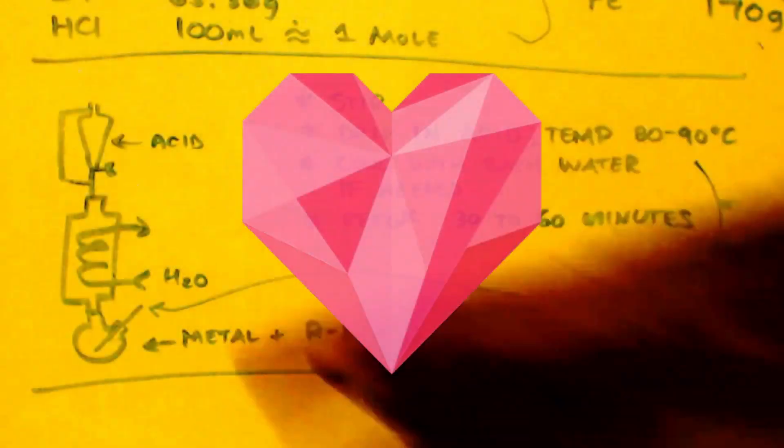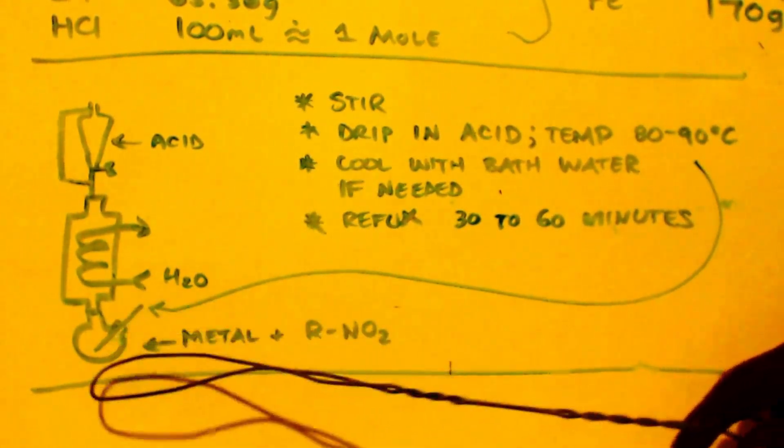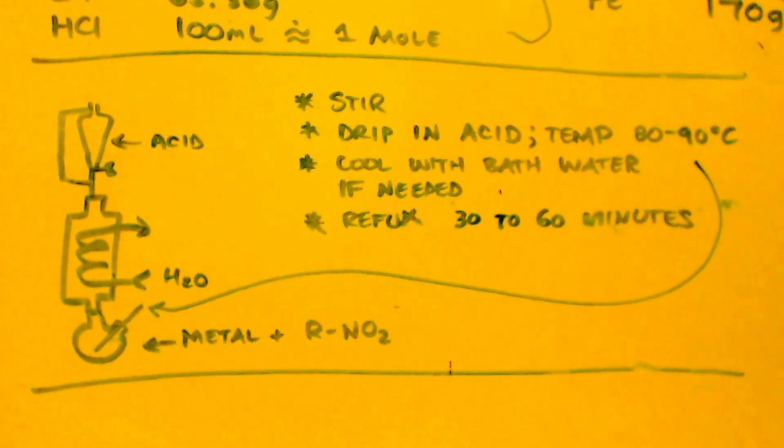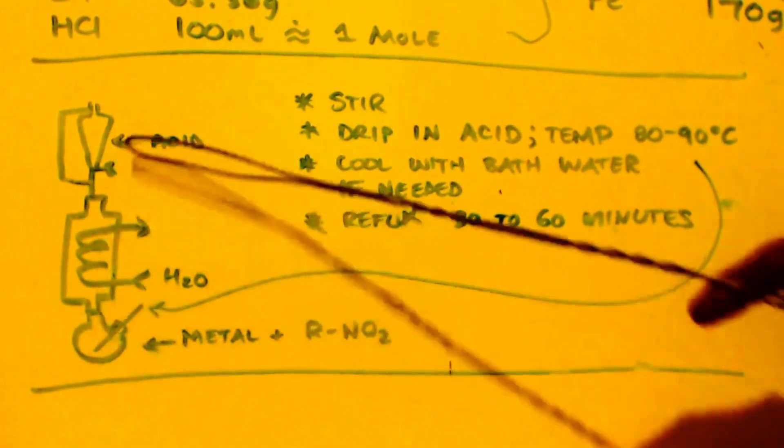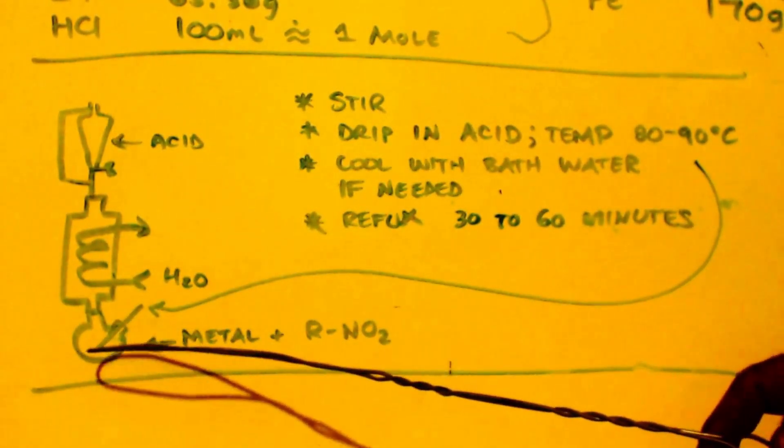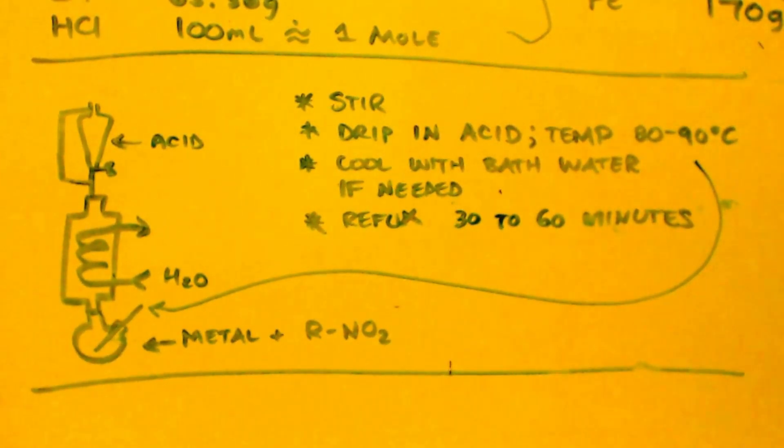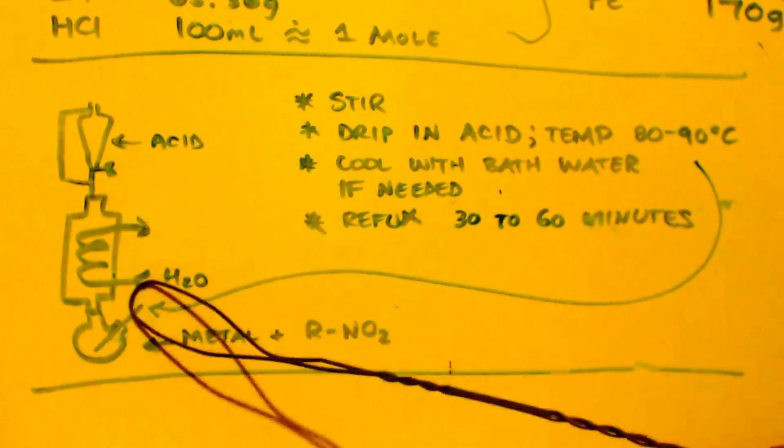Now, this is your setup. You're going to set up for reflux and you're going to have a thermometer down here so you can know what temperature your pot is at. And you're going to put your acid in here. You're going to put your metal and your nitro group in the flask here, the bottom flask. You're going to stir it up. You have to have stirring. Lots of vigorous stirring or you will get a bad yield. That's for sure.